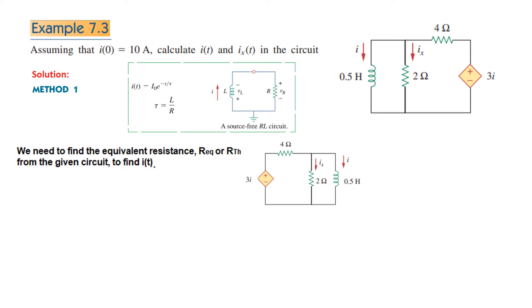We need to find the equivalent resistance Rₑq or Rth from the given circuit to find I(t). What I have done is inverted the circuit this way so that our load comes on the right-hand side, and I feel more comfortable in this pattern.